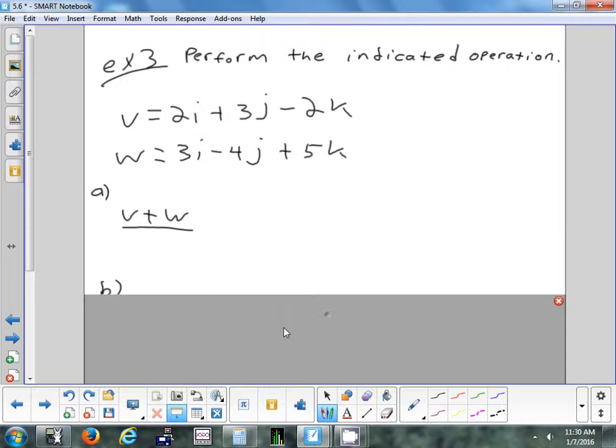Jake, can you tell me what vector v plus w would be? It would be 2i plus j minus 2k plus 3i minus 4j plus 5k. Can you do that first part again? What do you get when you add up your i's? 5i. And your j's you had? Negative j. Good. Negative j. And that last one? 3k. 5i minus j plus 3k.